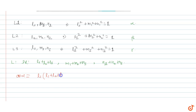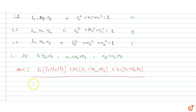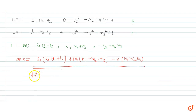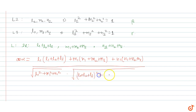So cos alpha equals L1 into (L1 plus L2 plus L3) plus M1 times (M1 plus M2 plus M3) plus N1 times (N1 plus N2 plus N3), divided by the denominator. The denominator will be the square root of (L1 square plus M1 square plus N1 square) into the square root of (L1 plus L2 plus L3) whole square plus (M1 plus M2 plus M3) whole square plus (N1 plus N2 plus N3) whole square.